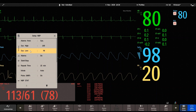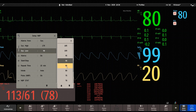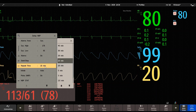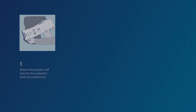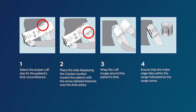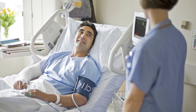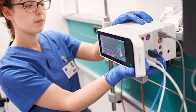Continue setup by setting appropriate alarm limits and repetitive measurements. Once bedside setup is complete, begin patient setup by choosing the appropriate cuff size for the patient's limb circumference and applying the cuff to the limb. Complete NIBP setup by ensuring the cuff is connected to the tubing and the tubing to the measurement server.